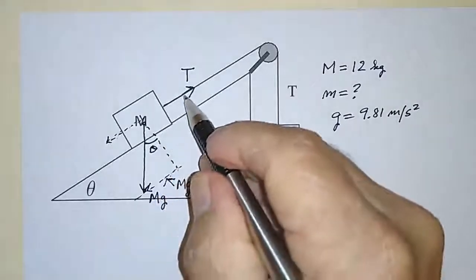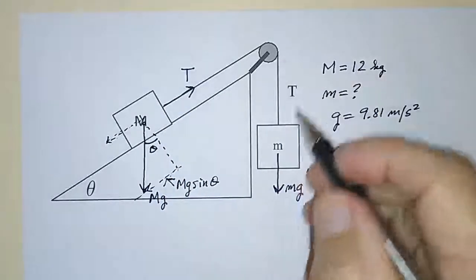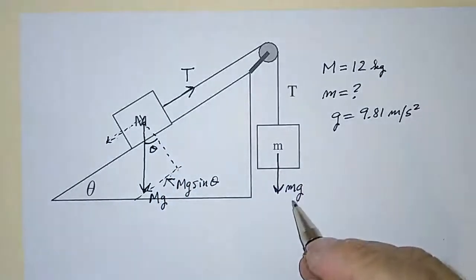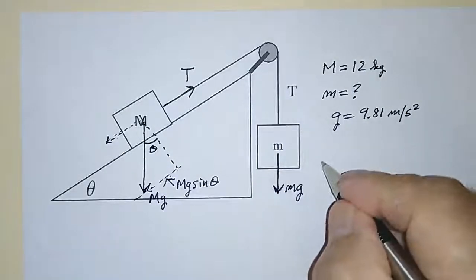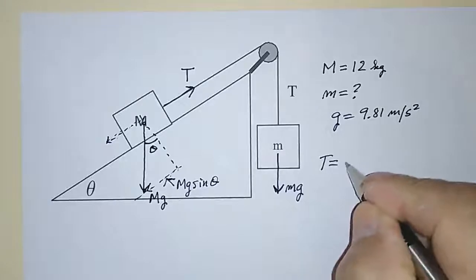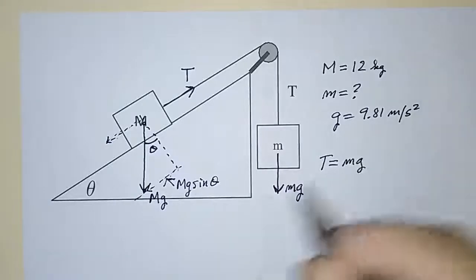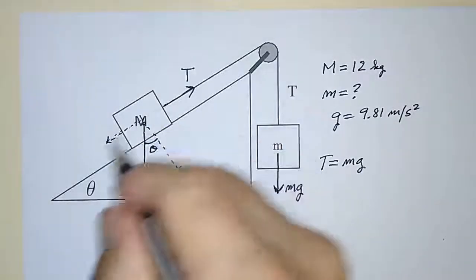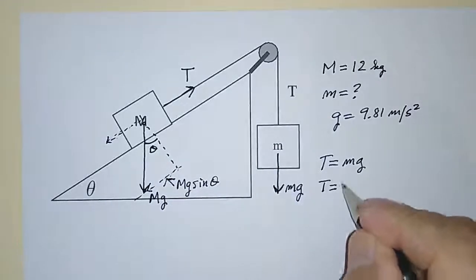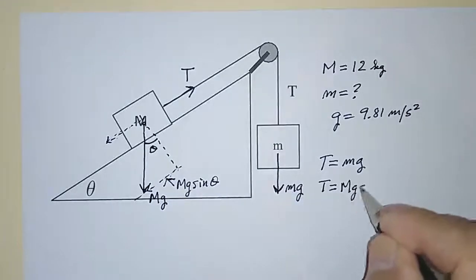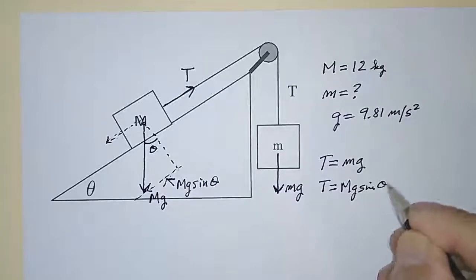And that has to be equal to T, which is equal to mg. In other words, from looking at this object, T is equal to mg. And from looking at this force balance equation, T is equal to Mg sine theta.